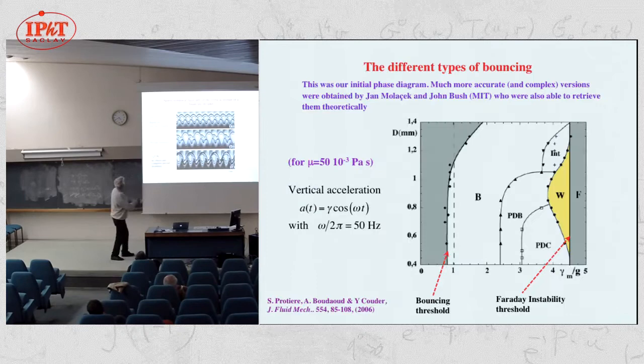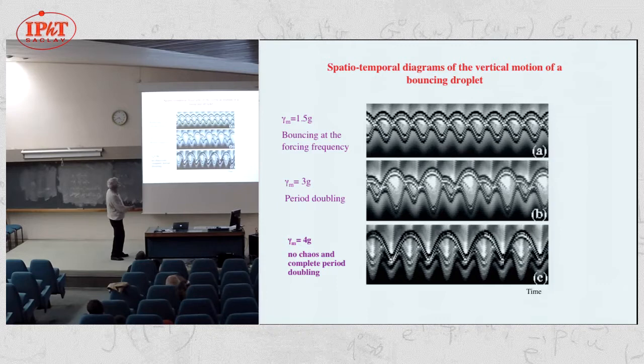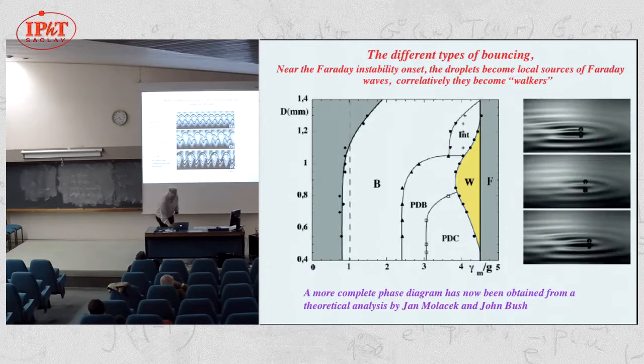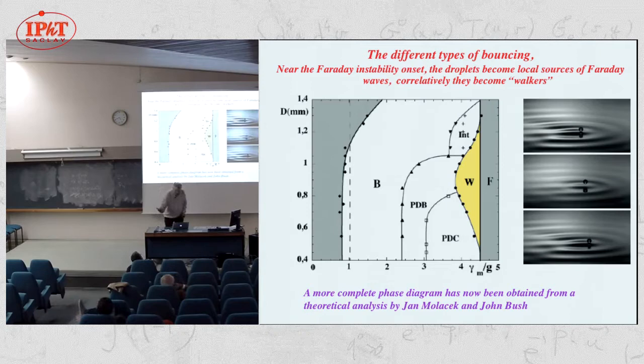The drop can bounce either at the forcing frequency for low acceleration, or at half the forcing frequency for large acceleration, because it jumps high and falls after two periods. In the domain where it has this period doubling of its bouncing, it becomes a walker.